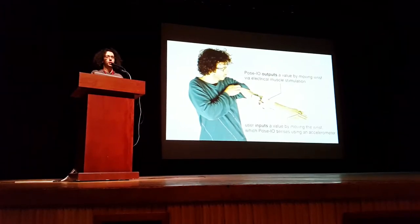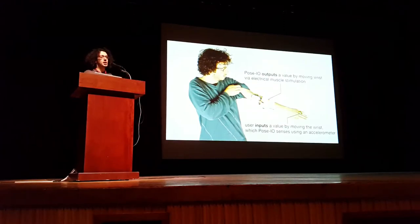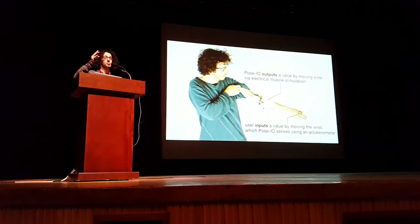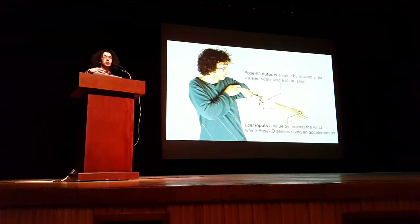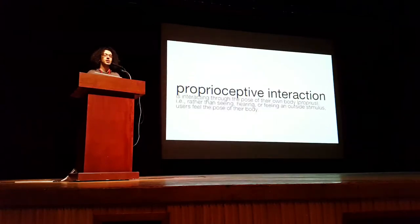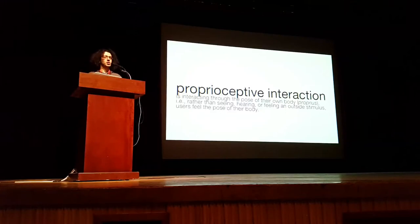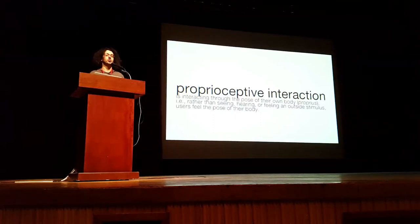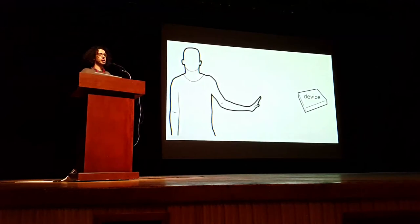We achieve this with a wearable bracelet that reads and writes to the user's muscles. It outputs a value by using electrical stimulation to turn my wrist up — the angle is the value I'm perceiving. I can also input by moving my wrist, which the device senses using an accelerometer to measure the wrist angle. We call this proprioceptive interaction: you control the computer and feel the computer's response using merely the pose of your own body — not visual, auditory, or vibrotactile stimuli.